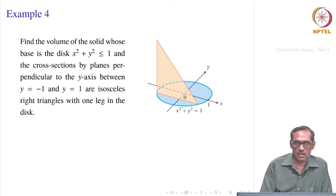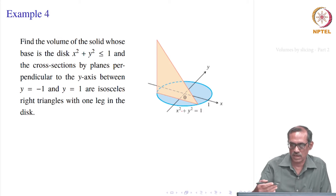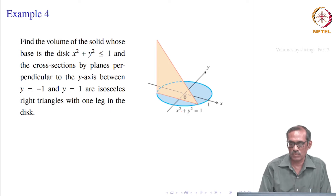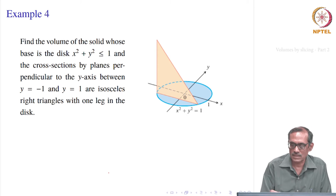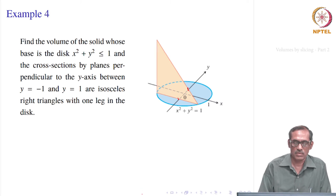And then the cross sections by planes perpendicular to the y-axis. So if you take any cross sectional area — take the slice or cross section of the solid by taking a plane which is perpendicular to the y-axis, that is parallel to the x-z plane, then you will get the limits for y as minus 1 and 1. That is how it gives y equal to minus 1 to y equal to 1.